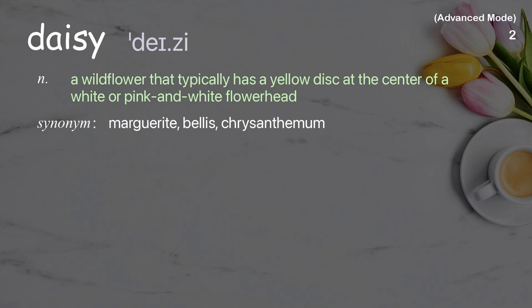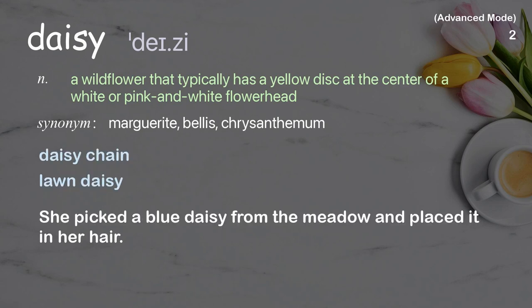Daisy: a wildflower that typically has a yellow disc at the center of a white or pink-and-white flower head. Examples: daisy chain, lawn daisy. She picked a blue daisy from the meadow and placed it in her hair.